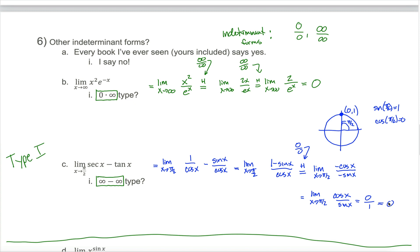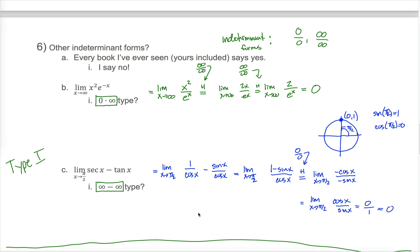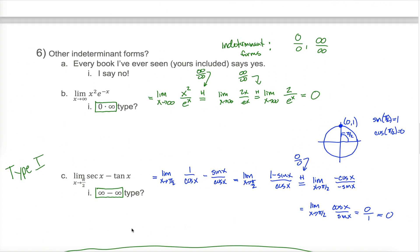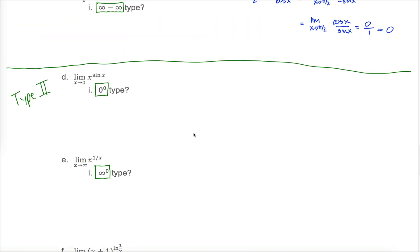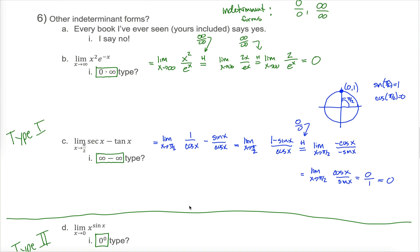The limit as x approaches pi over 2 of secant of x minus tangent of x is 0 — not something you could figure out without L'Hopital's rule. You don't need to recognize that secant and tangent both approach infinity and that infinity minus infinity is indeterminate. Just change the expression into a fraction, and it becomes the 0 over 0 type. There are three more types of indeterminate forms — Type 2 — involving variables in both the base and exponent. We'll cover those algebraic tricks in the next video.